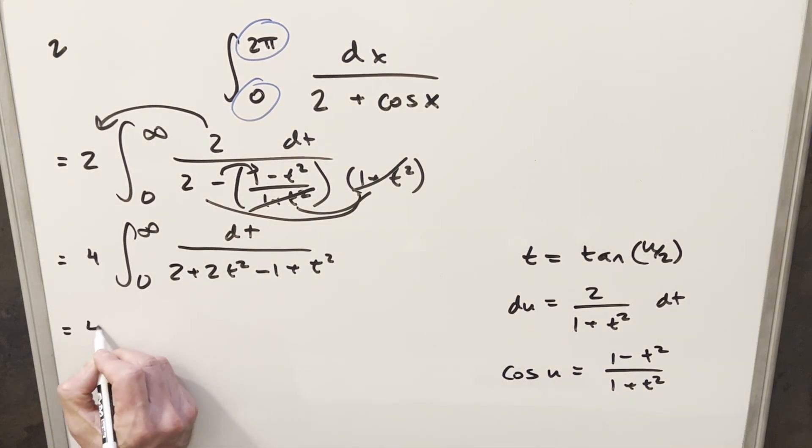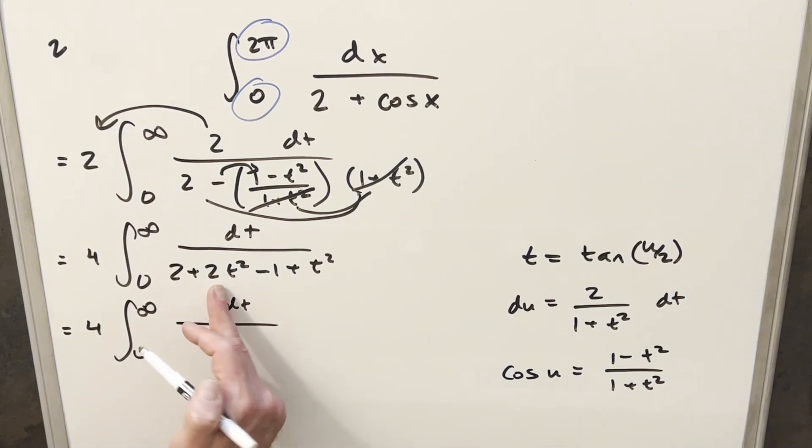And so we can just simplify everything here and combine like terms. So this is going to become, what's going to happen here is 2t squared plus t squared. This is going to give me 3t squared. 2 minus 1, that's just going to be 1.